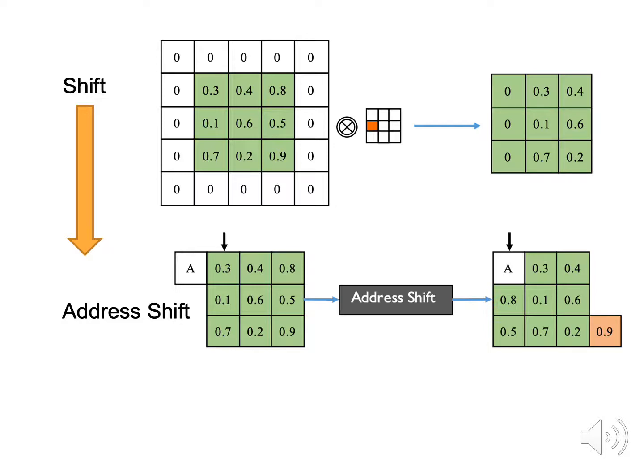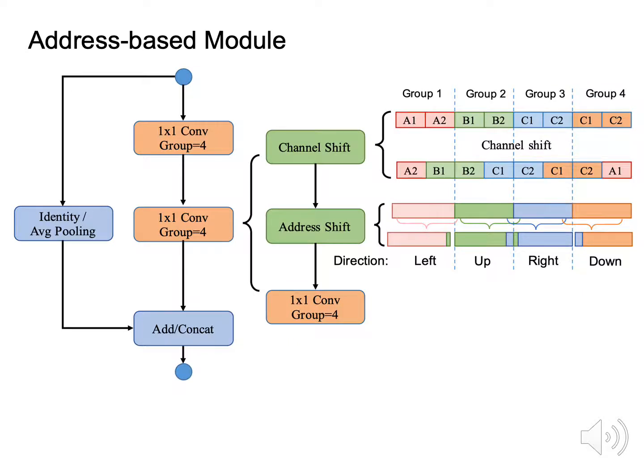Then, factoring the tensor continuously in the memory space starting from the address is equivalent to shifting the whole tensor to the right by one grid.